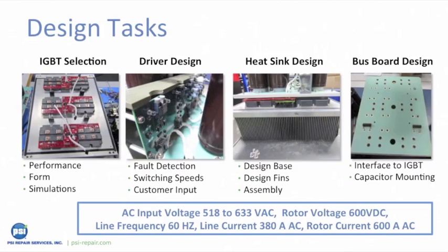The third step is heat sink design — providing adequate surface area for the anticipated heat load while maintaining continuity of the physical installation requirements. The existing design can be a starting point, and any additional heat dissipation efficiencies help create a longer-lasting product. We also look for opportunities to reduce manufacturing cost. The last step is bus board design: the new bus board must interface to the new IGBTs, provide clearances for mounting bus capacitors and driver boards, line up perfectly with the rigid bus bars in the existing controller, and be designed to avoid condensation pooling issues seen at some locations.